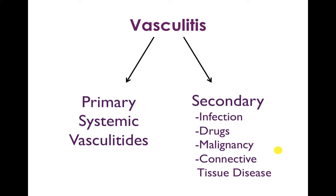What we'll be talking about in this lecture are primary systemic vasculitides — that is, vasculitis that is the primary disease manifestation, rather than vasculitis that is secondary to infection, drugs, malignancy, or connective tissue disease such as lupus or progressive systemic sclerosis. So these are primary systemic vasculitides that we'll be focusing on today.